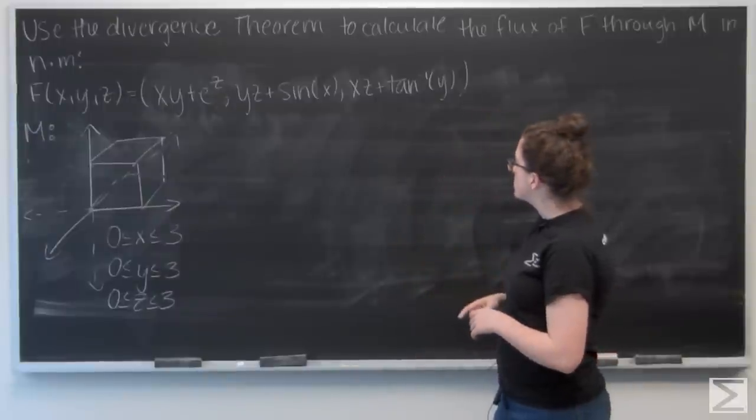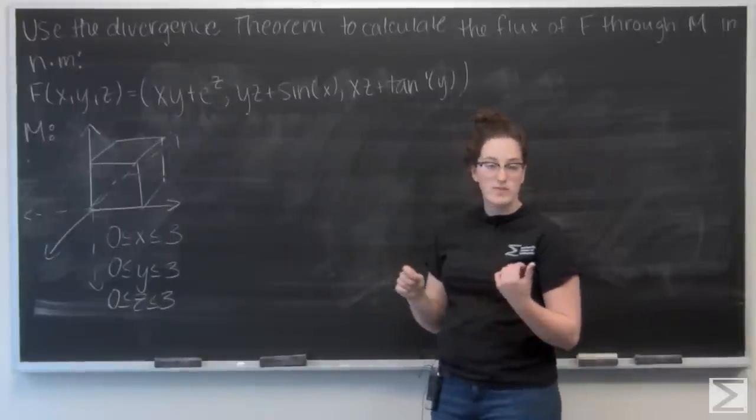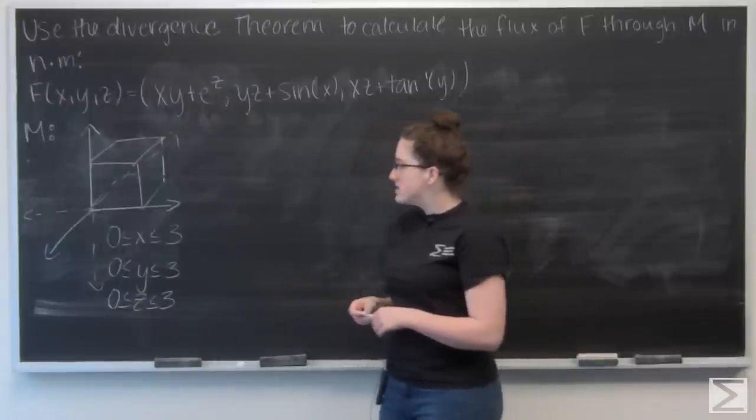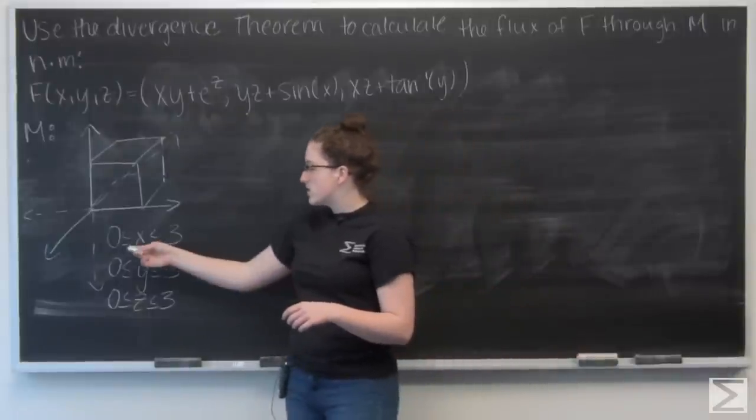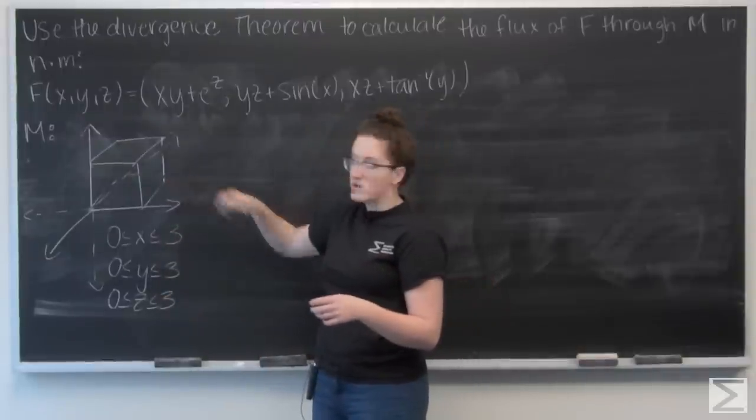In this question, I want to use the divergence theorem to calculate the flux of this given vector field F through M in Newton meters squared. M is the region that bounds this cube given for x, y, and z all between 0 and 3. So this is kind of a rough drawing of what that cube looks like.